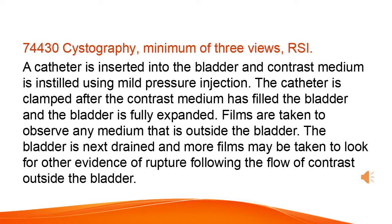Cystography requires a minimum of three views. A catheter is inserted into the bladder and contrast medium is instilled using mild pressure injection. The catheter is clamped after the contrast medium has filled and fully expanded the bladder. Films are taken to observe any medium that is outside the bladder. The bladder is next drained and more films may be taken to look for other evidence of rupture following the flow of contrast outside the bladder.